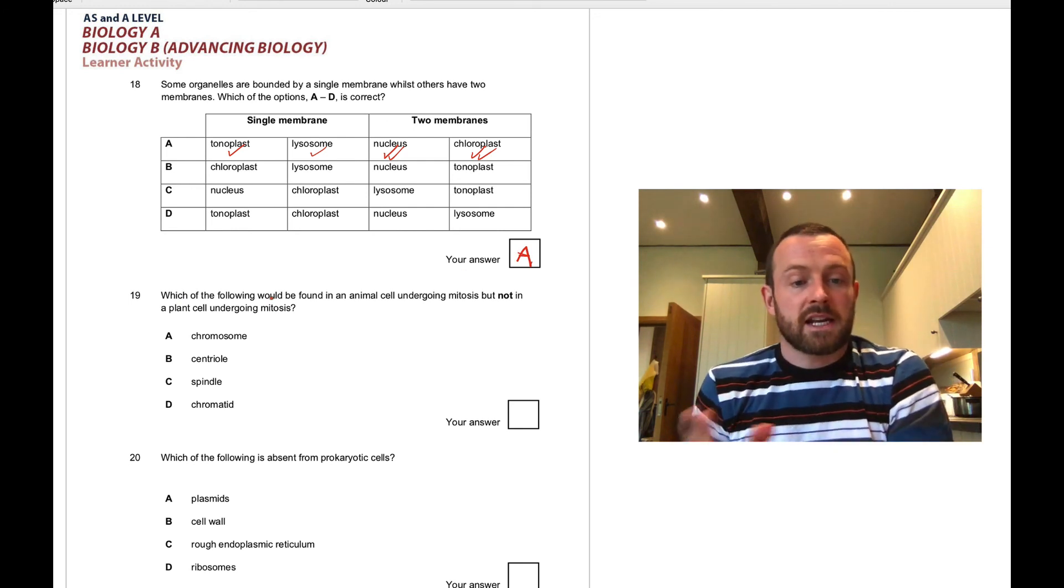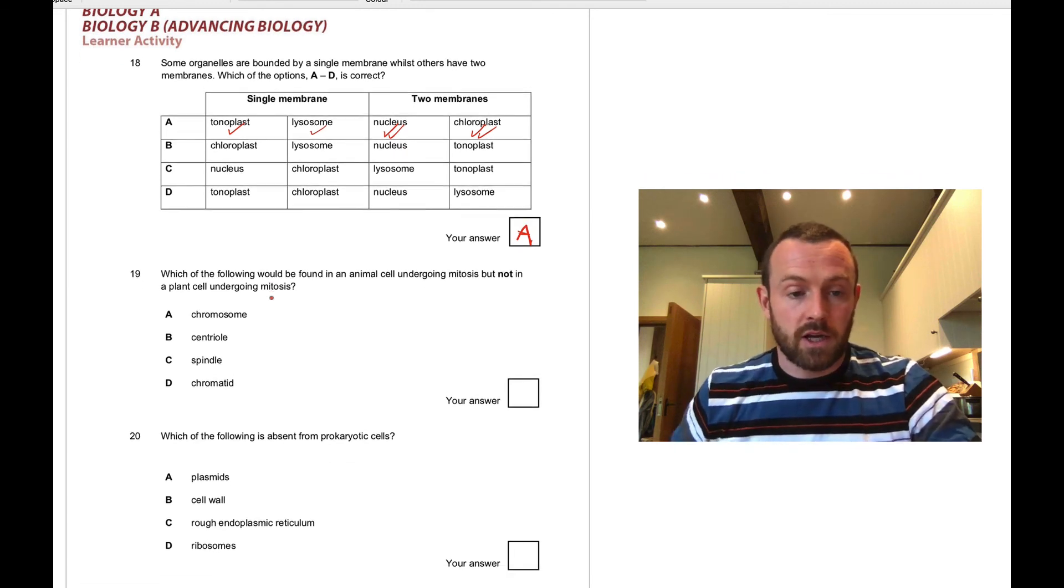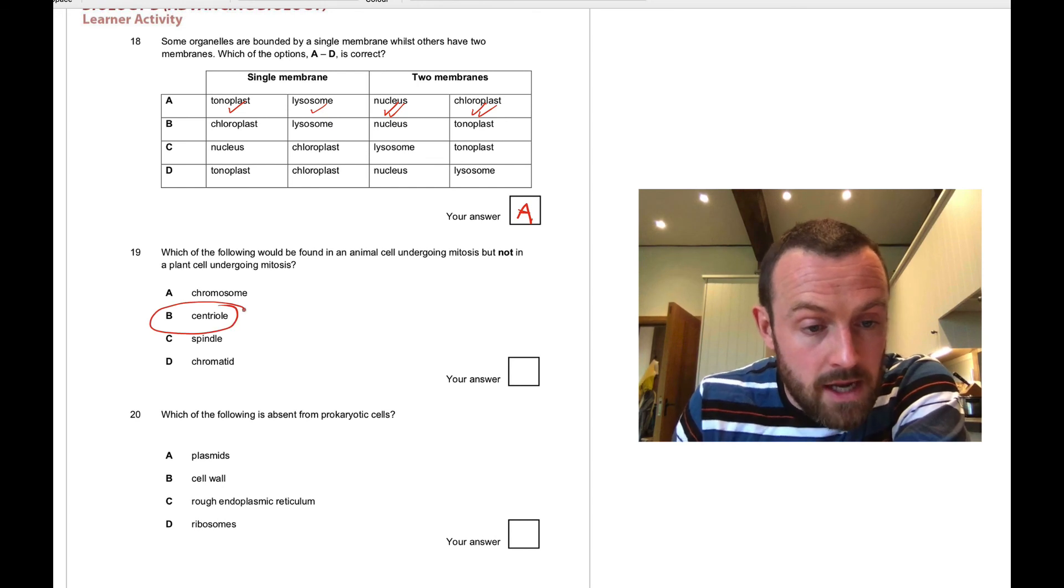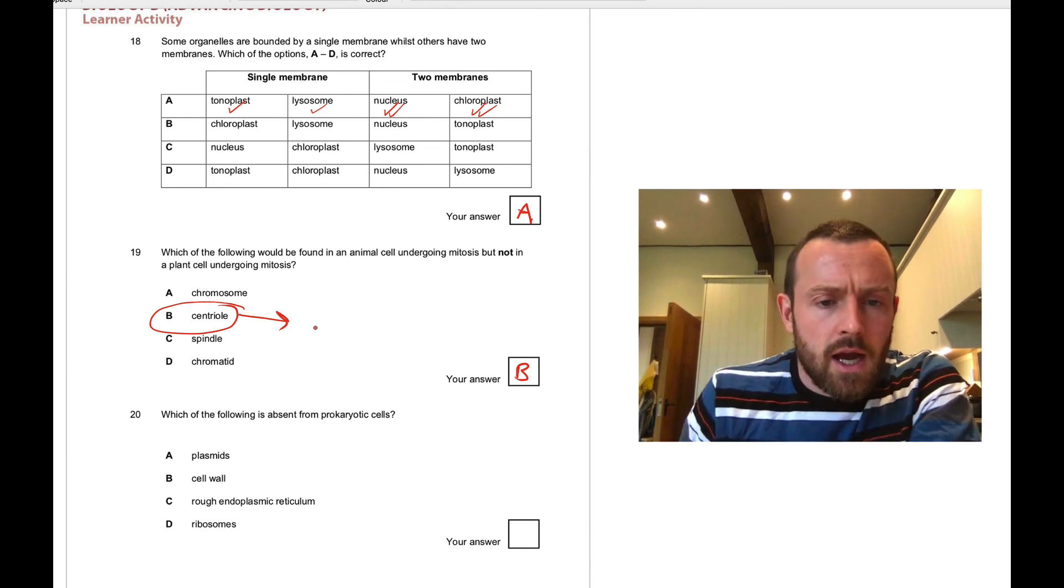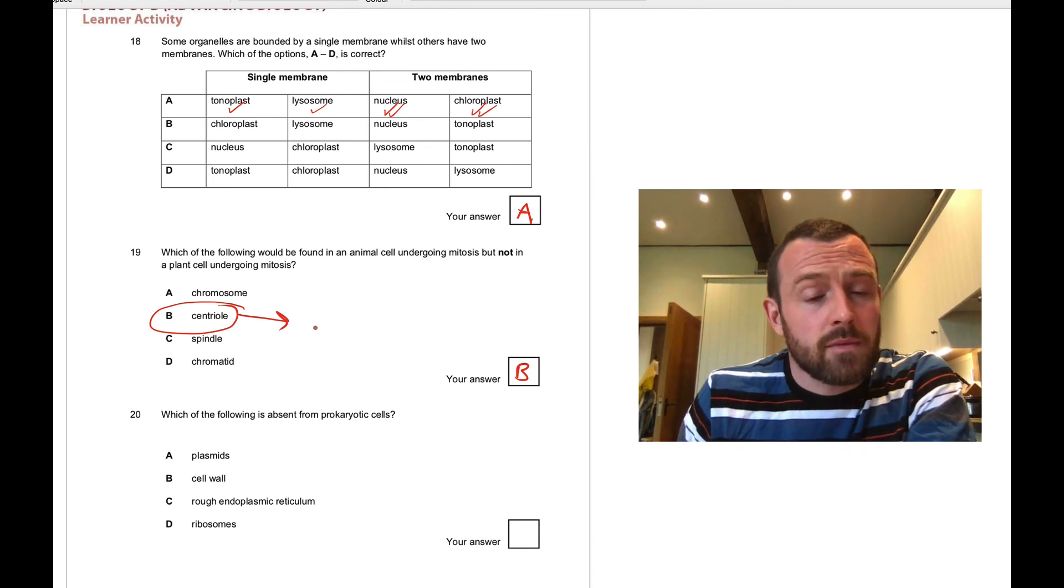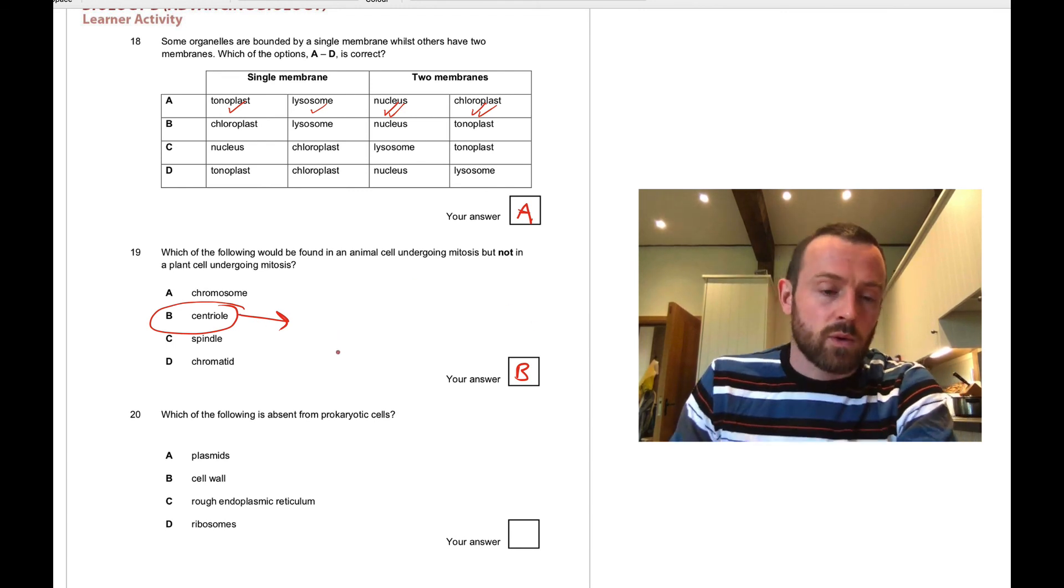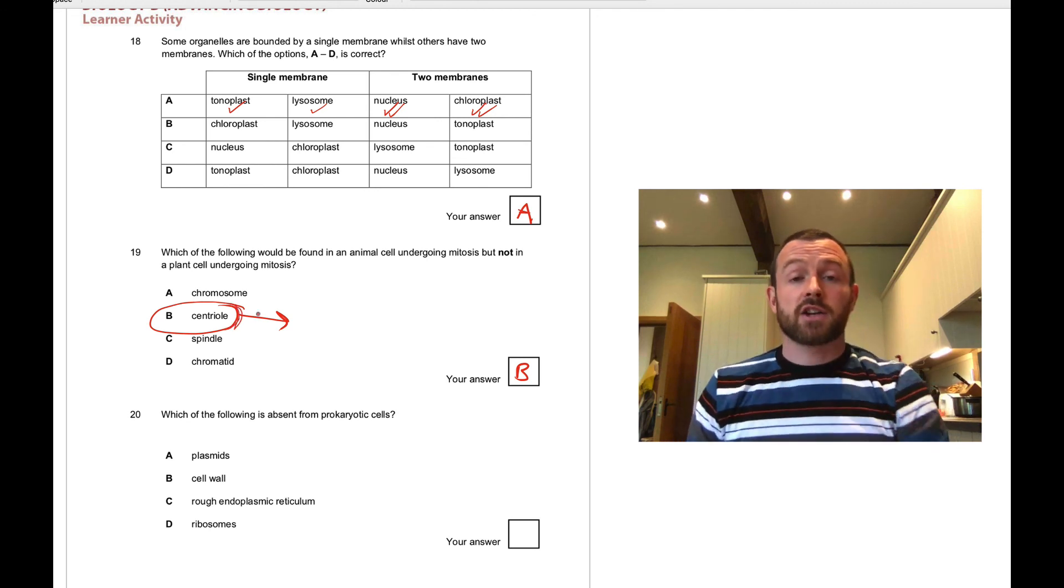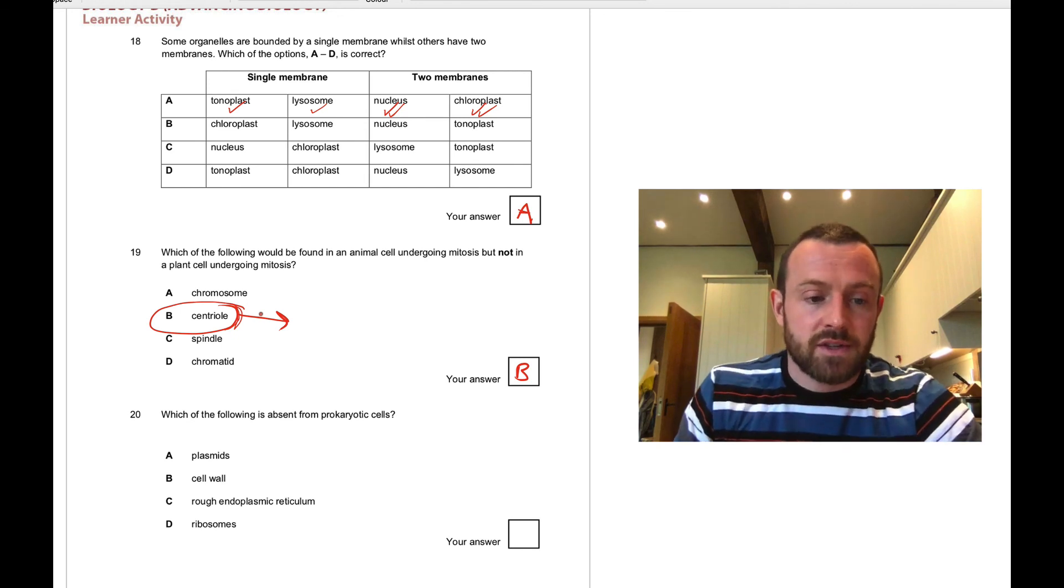Question nineteen: which of the following would be found in an animal cell undergoing mitosis but not in a plant cell undergoing mitosis? The answer is centriole B. I actually cannot remember what takes the role of a centriole in a plant cell mitosis. Someone look it up, message me on Teams, remind me what it is. But in animal cells, we have centrioles. In plant cells, I think there's something slightly different that generates those spindle fibers and pulls the chromosomes apart. Subtle difference in mitosis.